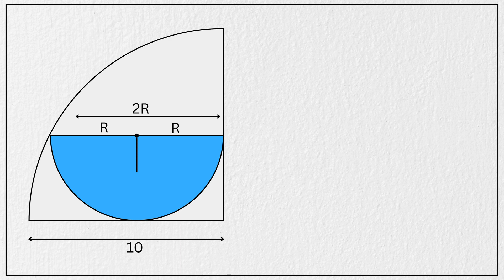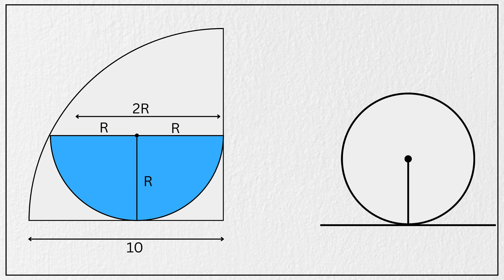Now, let's draw the radius to the point of tangency like this. We know that whenever a radius is drawn to a tangent at the point of tangency, it is always perpendicular to that tangent. That means this angle here is a right angle, correct?